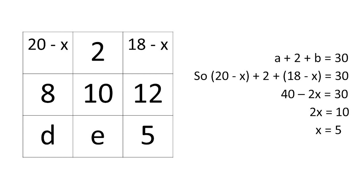Then we look at the top row and we can see that A plus 2 plus B equals 30. We can substitute: (20 minus X) plus 2 plus (18 minus X) equals 30.